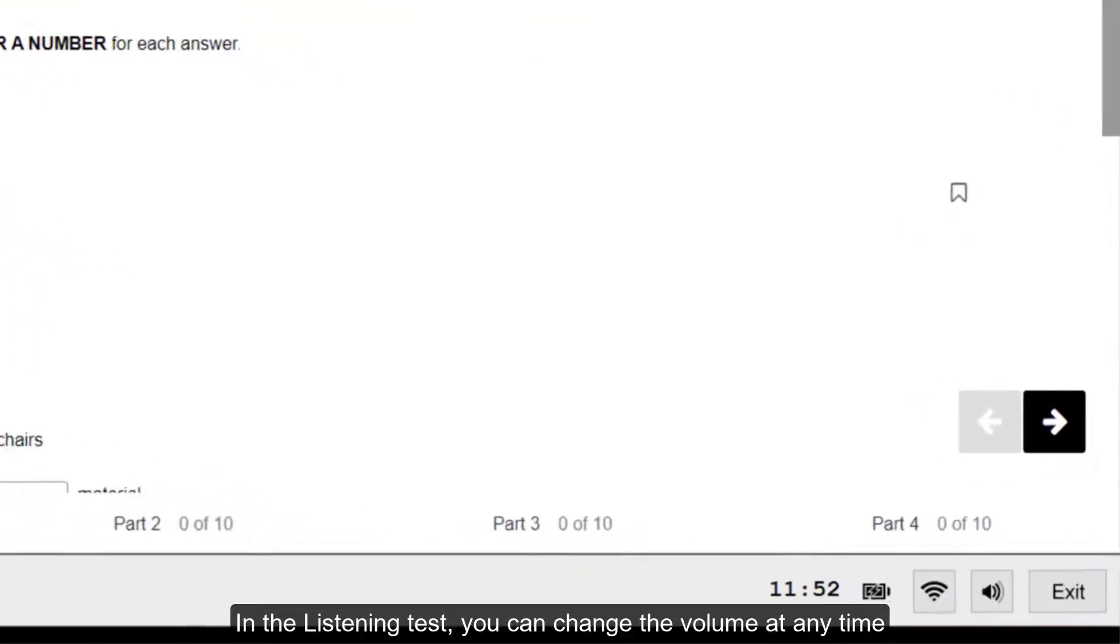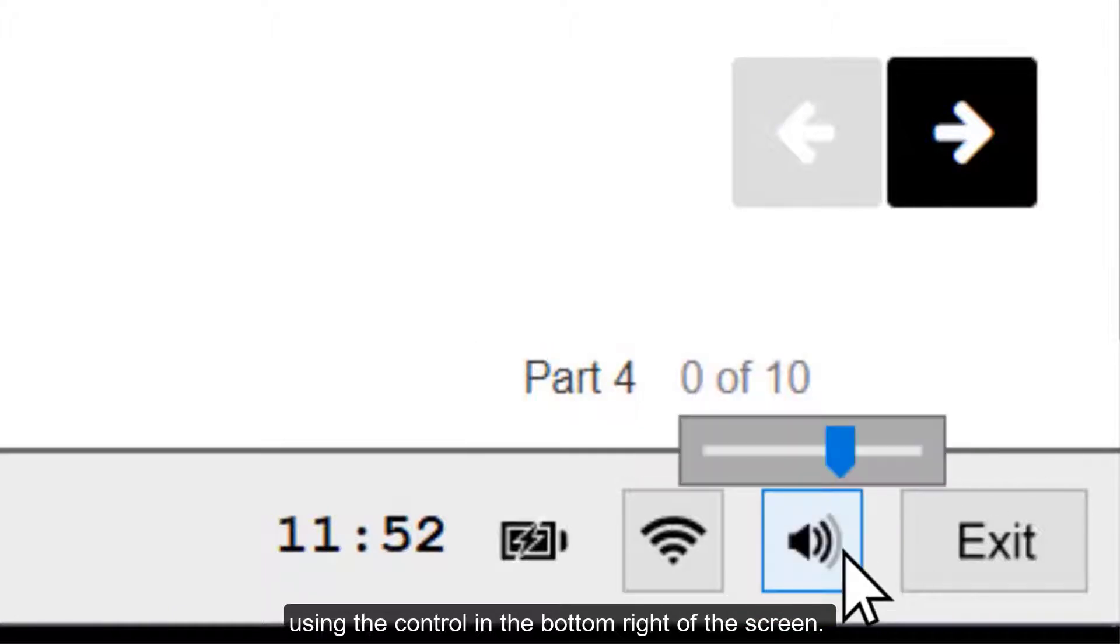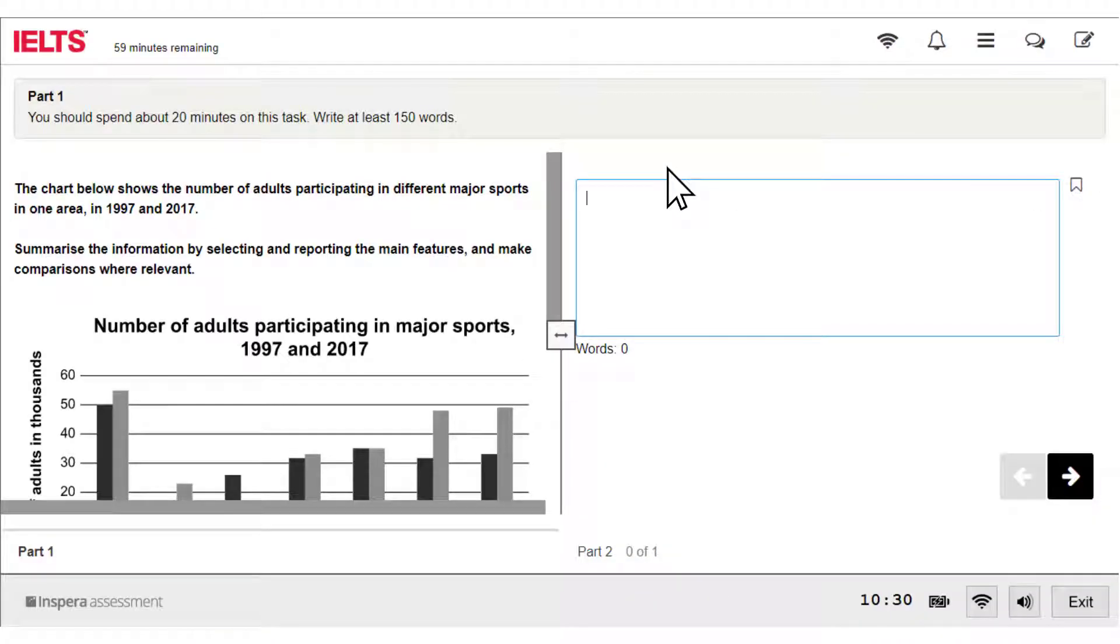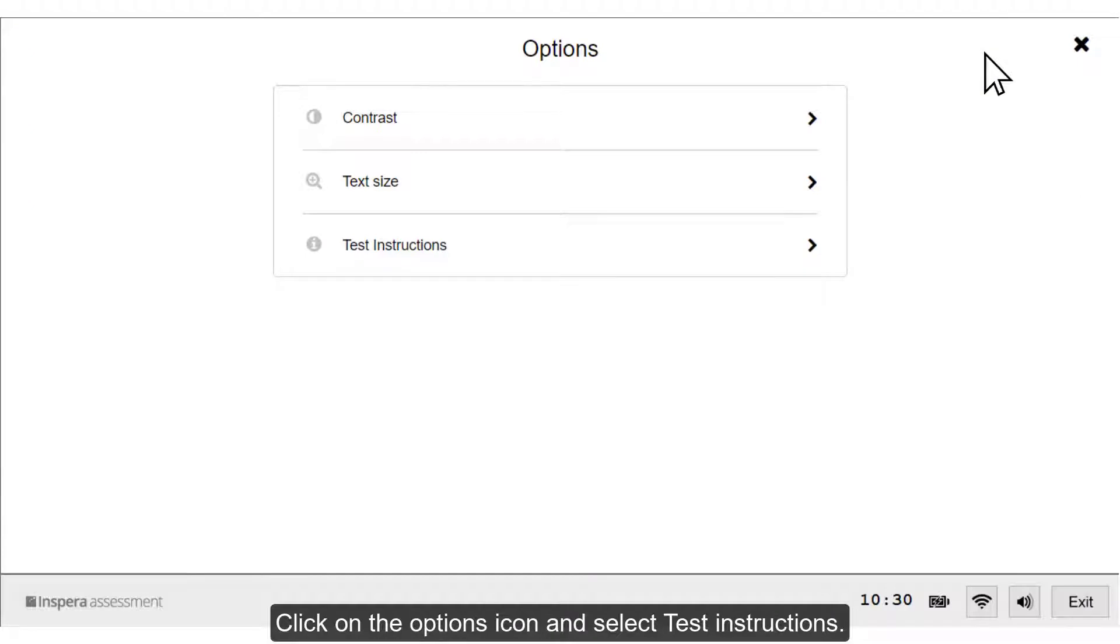In the listening test, you can change the volume at any time using the control in the bottom right of the screen. You can access the test instructions from the options menu. Click on the options icon and select test instructions.